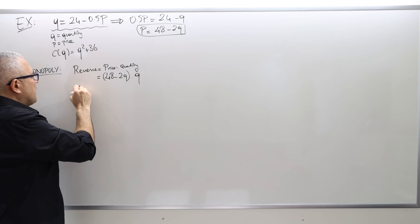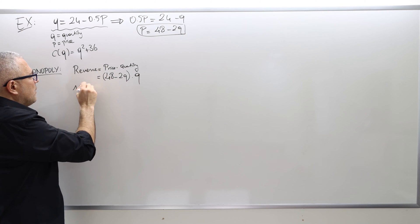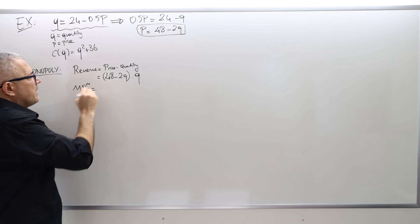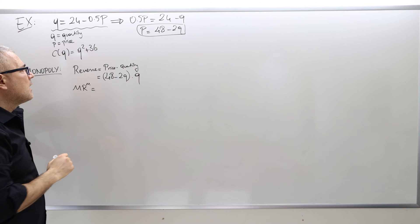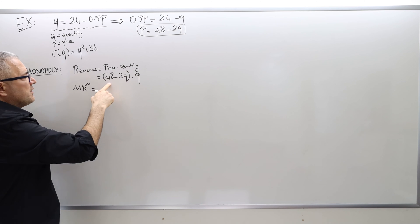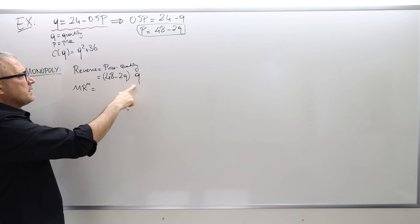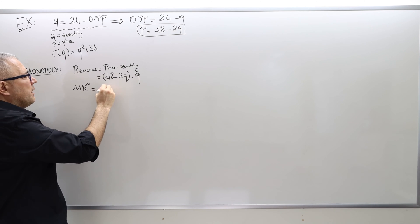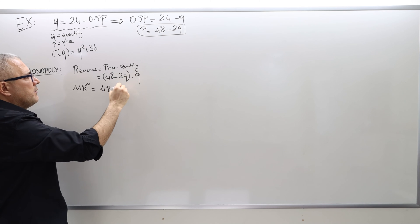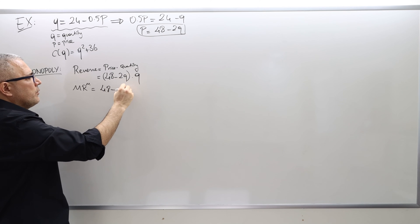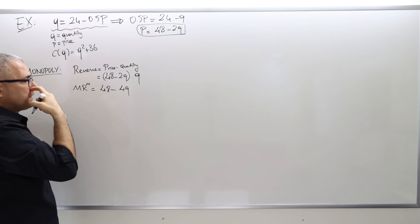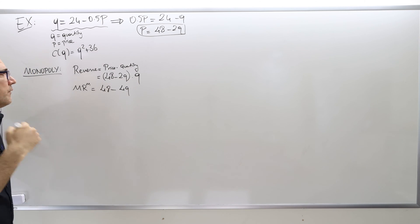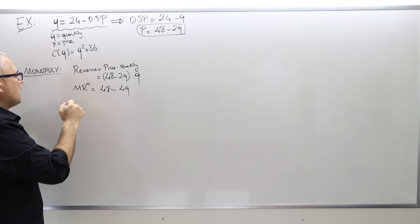So what is the marginal revenue of the monopolist? It's the derivative of revenue with respect to Q. Revenue is (48 minus 2Q) times Q, so marginal revenue is 48 minus 4Q. That's the marginal revenue of the monopolist.